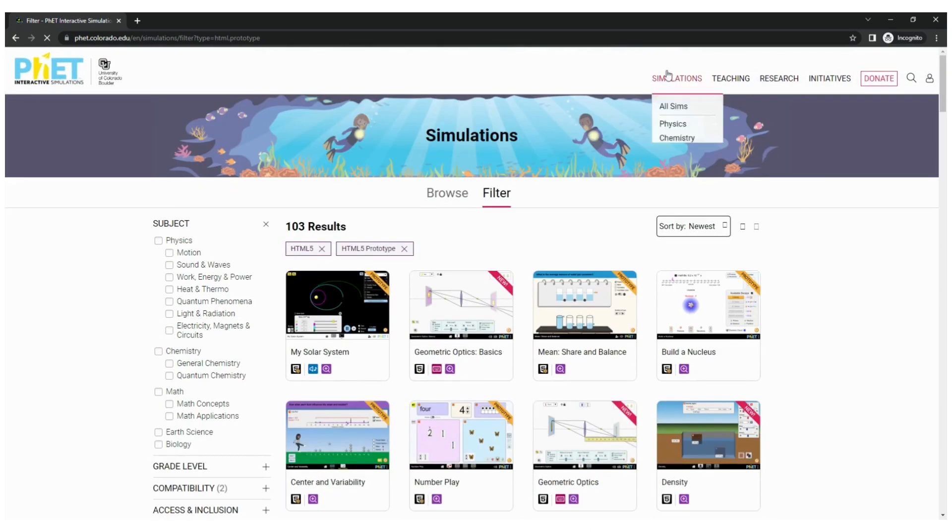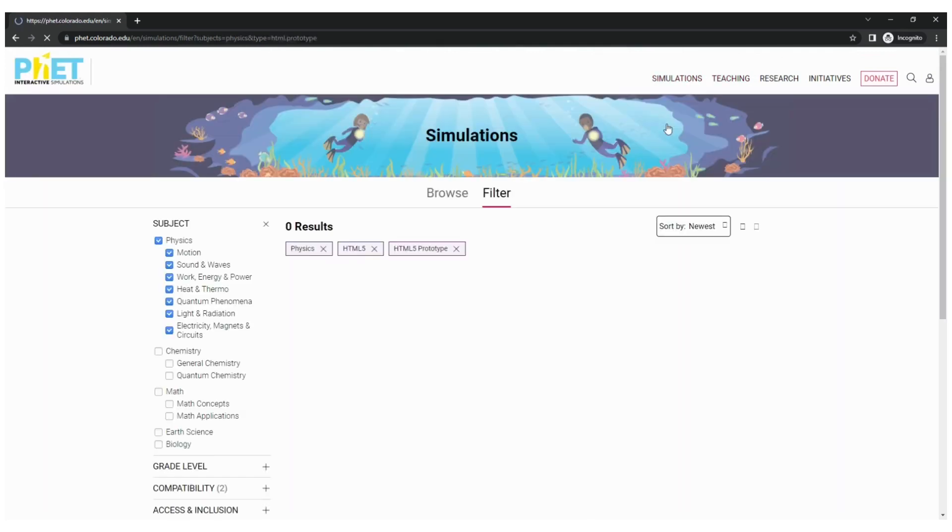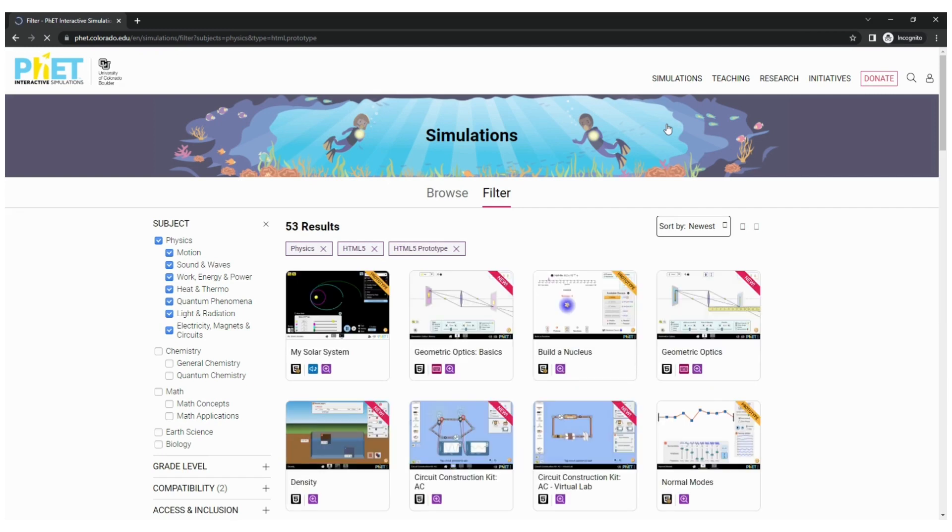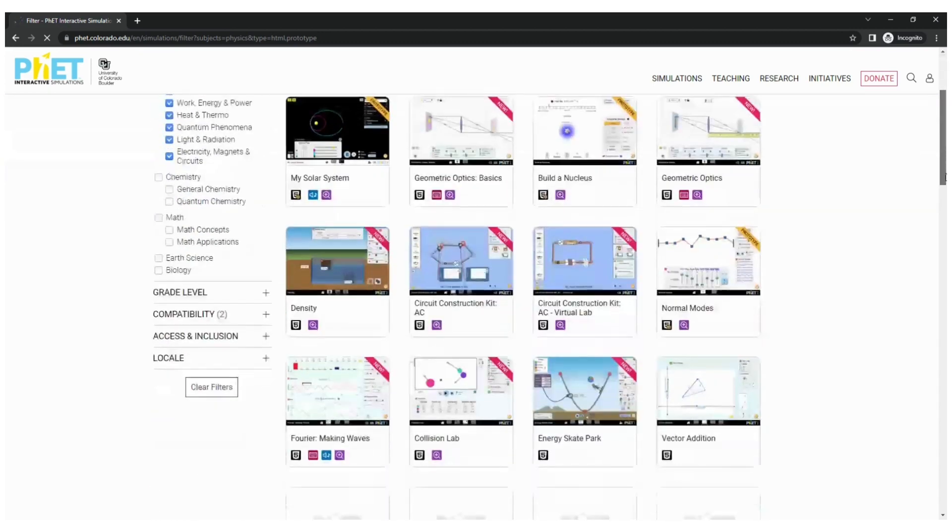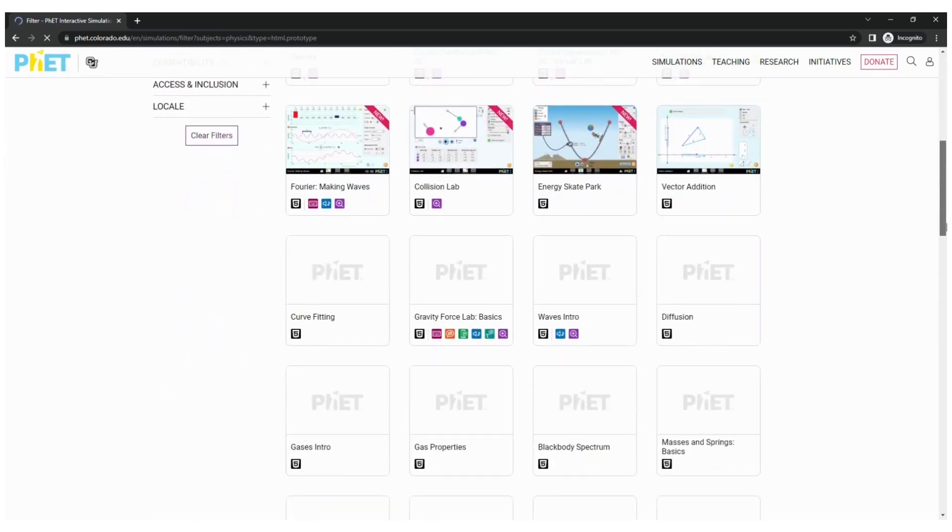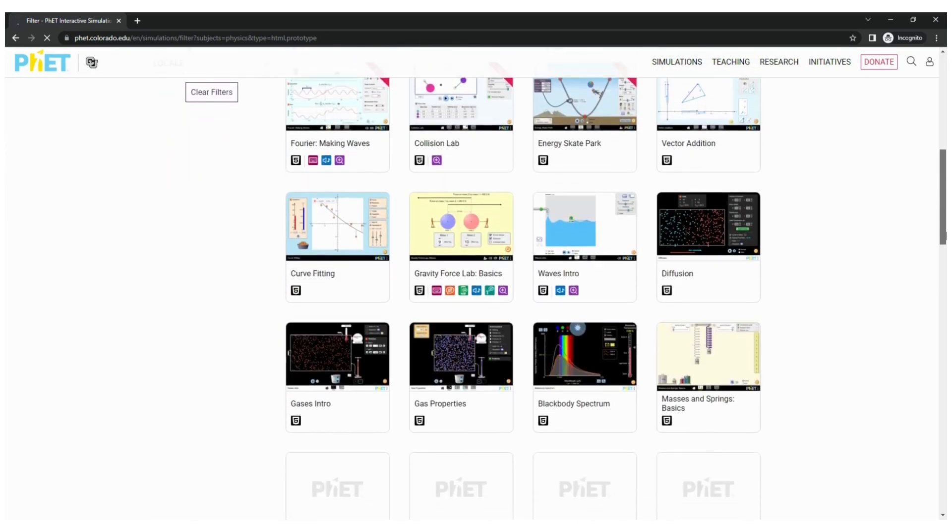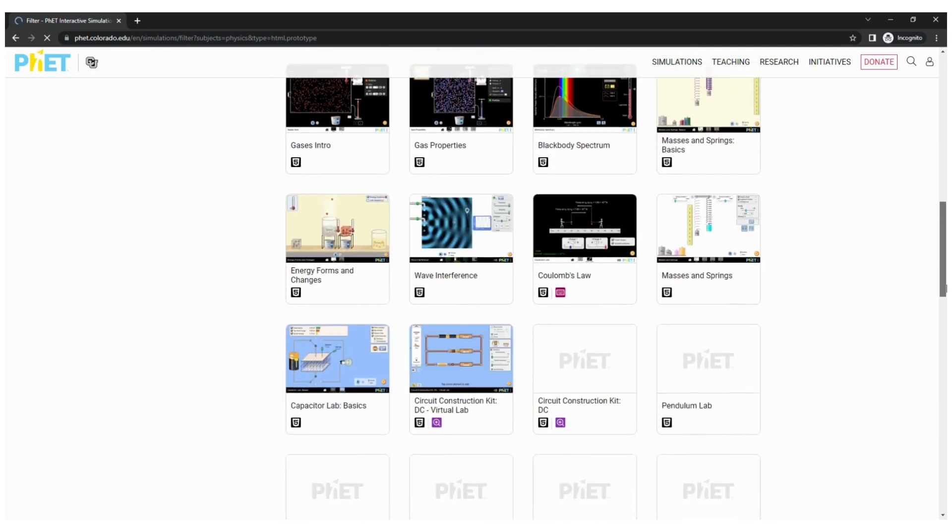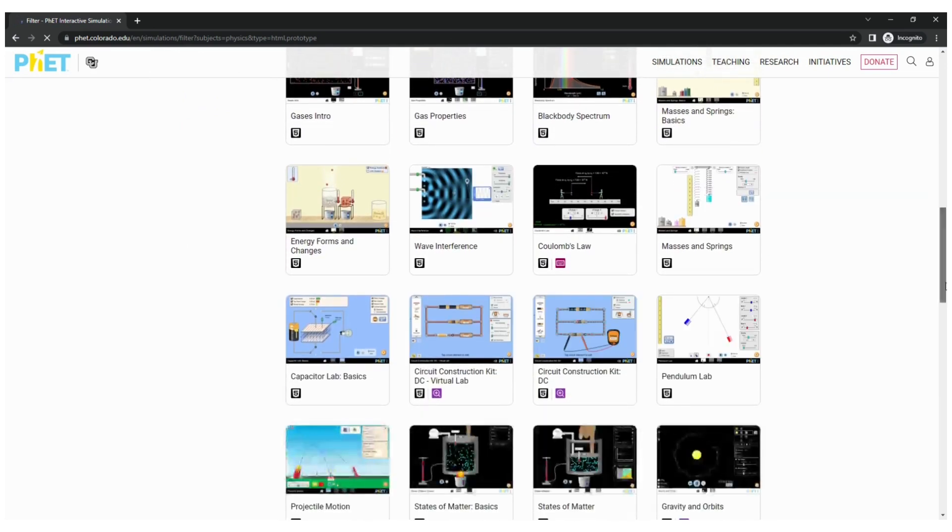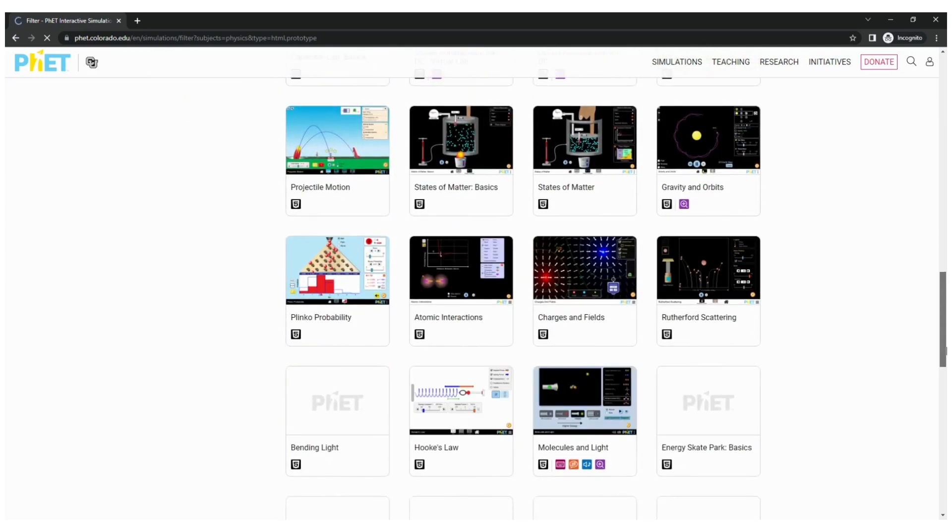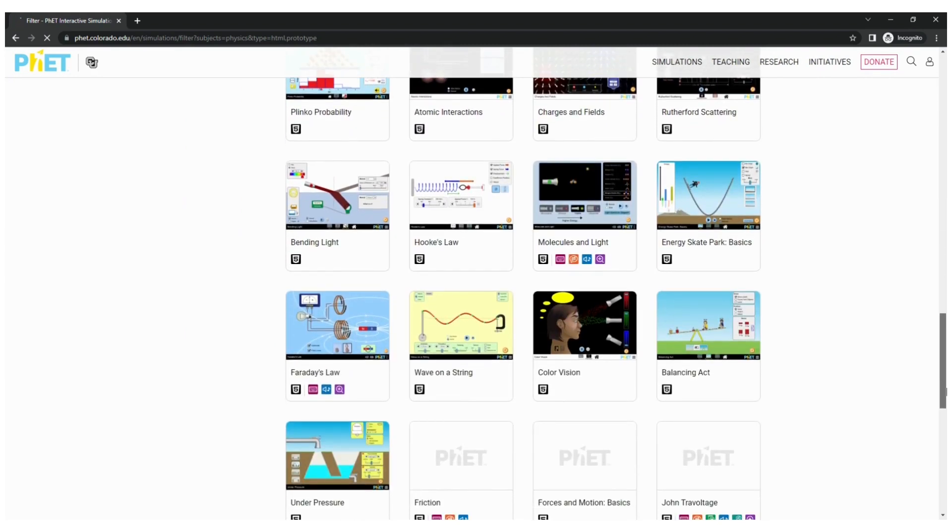It is designed to help students learn difficult science concepts more easily. It uses visualizations and animations to make complex concepts more understandable and engaging. It covers topics such as physics, chemistry, biology, and mathematics. PhET simulations are designed to be used in both the classroom and at home. They are also used in research and development to help scientists and engineers better understand and analyze complex phenomena.